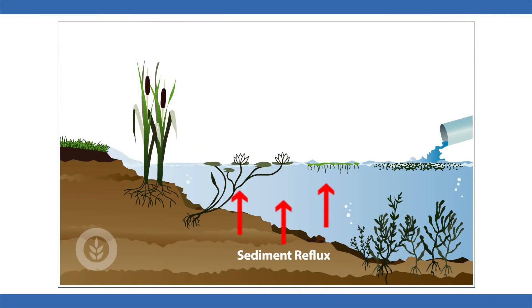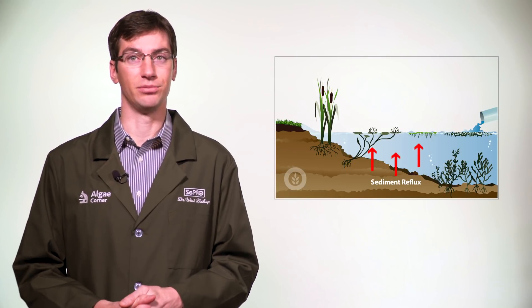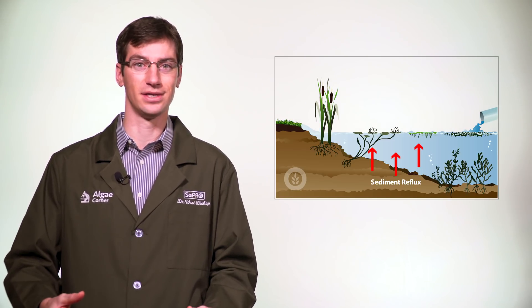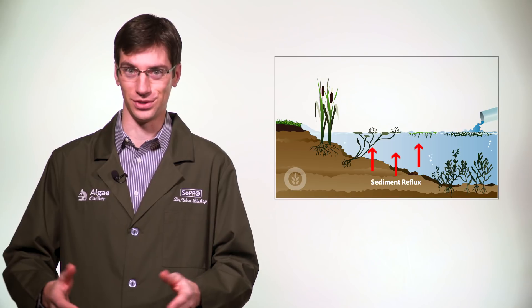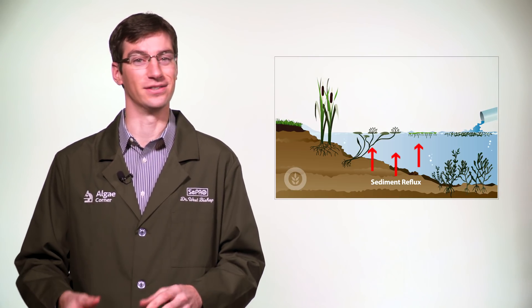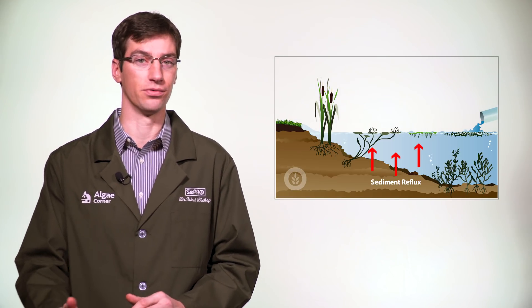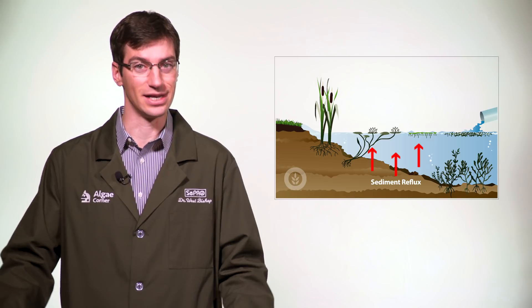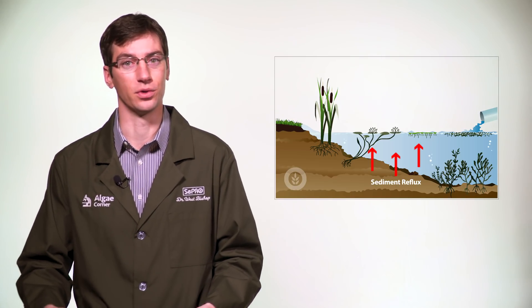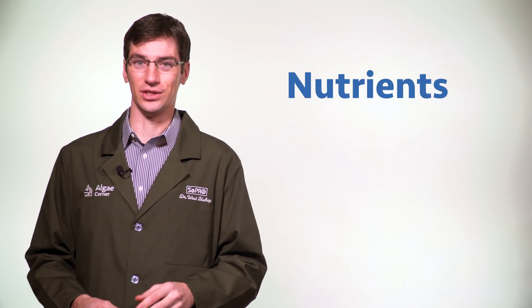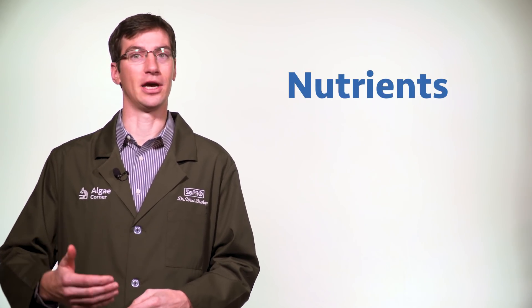Nutrients in the sediments are very critical to nuisance algae ecology and can be more available at different times of year. In summertime, under hot stratified conditions, nutrients may get released from the sediments and cyanobacteria — those nuisance noxious organisms that can produce toxins — can access these. They can move up and down in the water column, get down near the sediment-water interface, and access these legacy nutrients, uptaking them to grow. So offsetting nutrients is important, but it certainly doesn't mean you won't have nuisance or noxious types of algae.